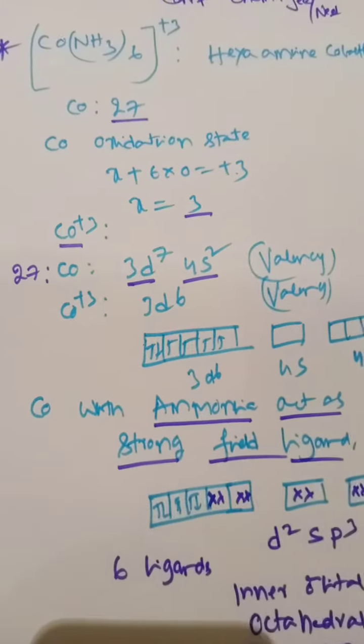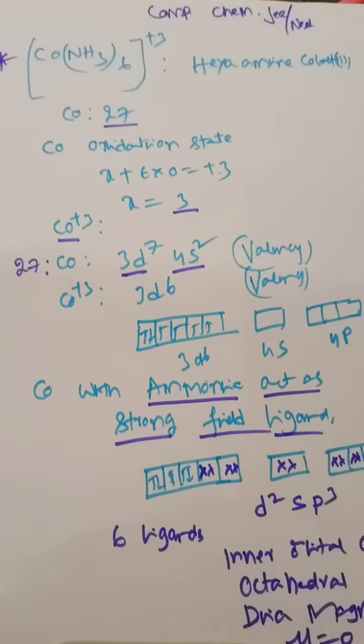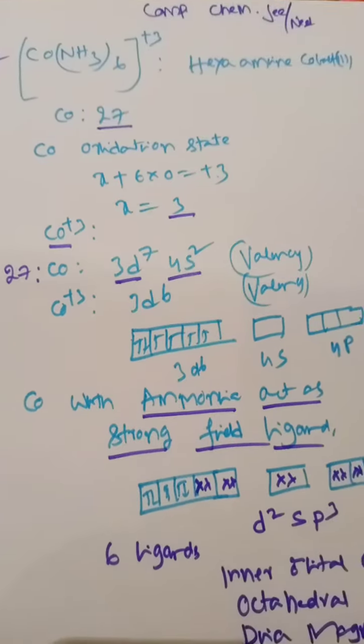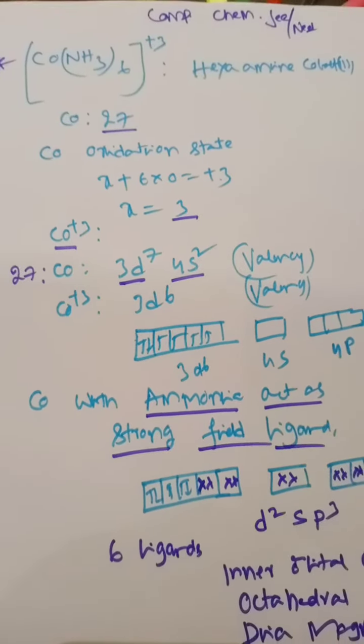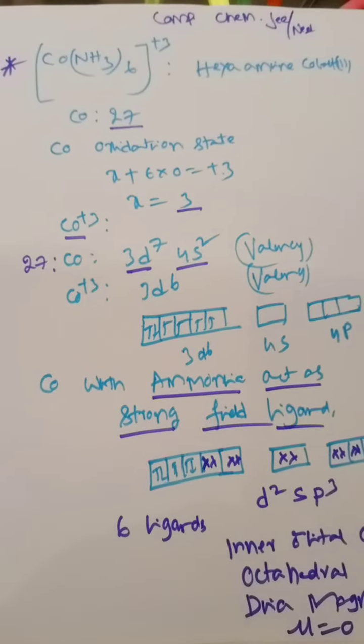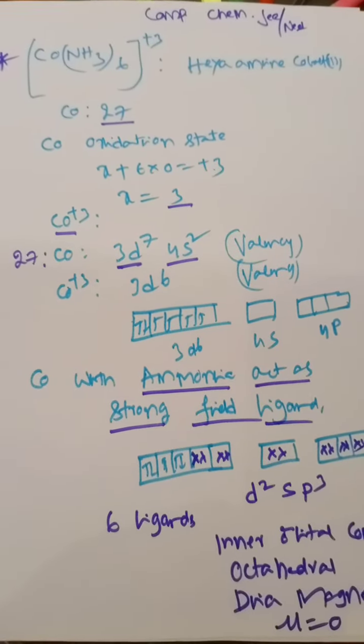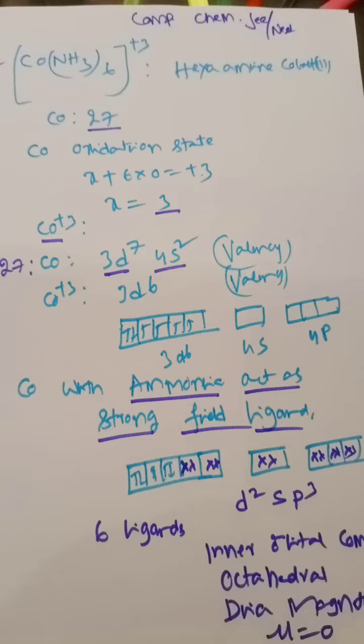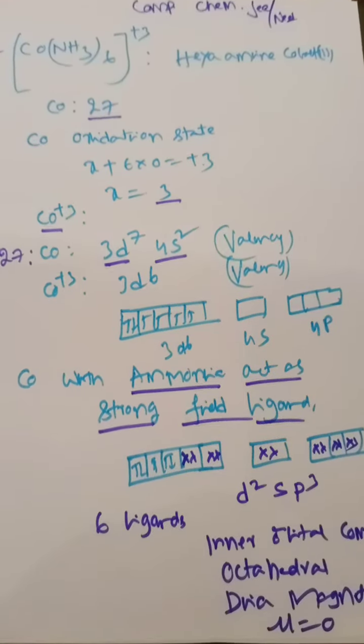Welcome to competitive chemistry. Let's focus on [Co(NH3)6]³⁺, hexamine cobalt(III). Calculate the oxidation state of cobalt: let x be the oxidation state, then x + 6(0) = +3, where ammonia has zero charge, so x equals 3.